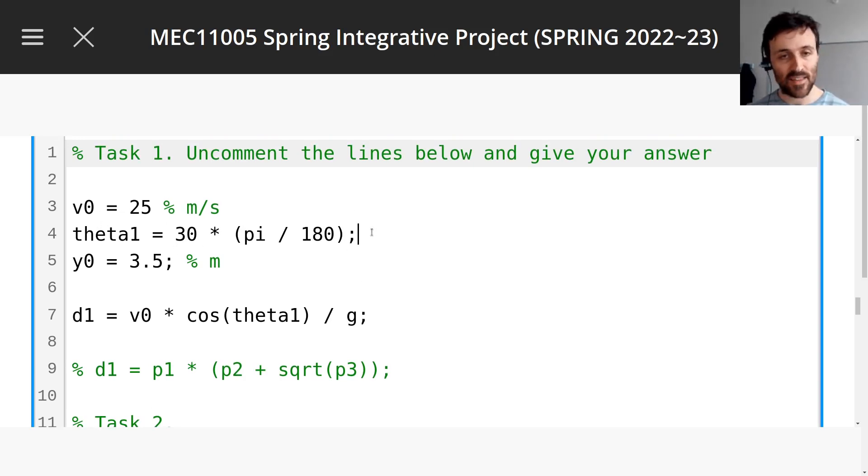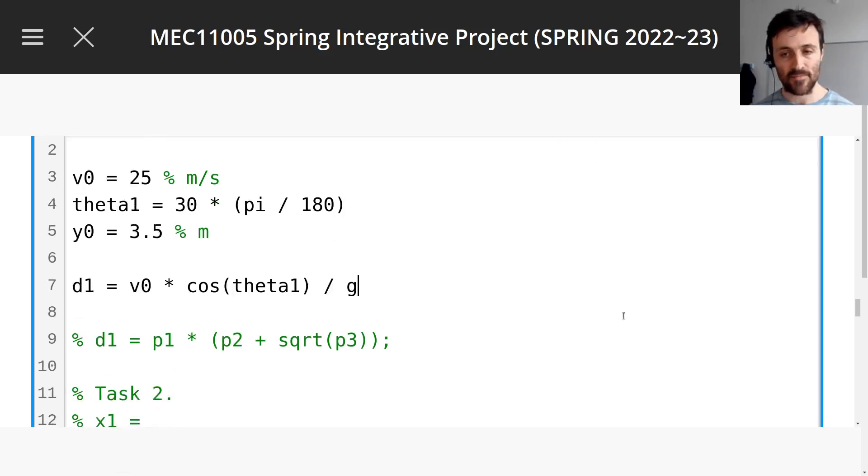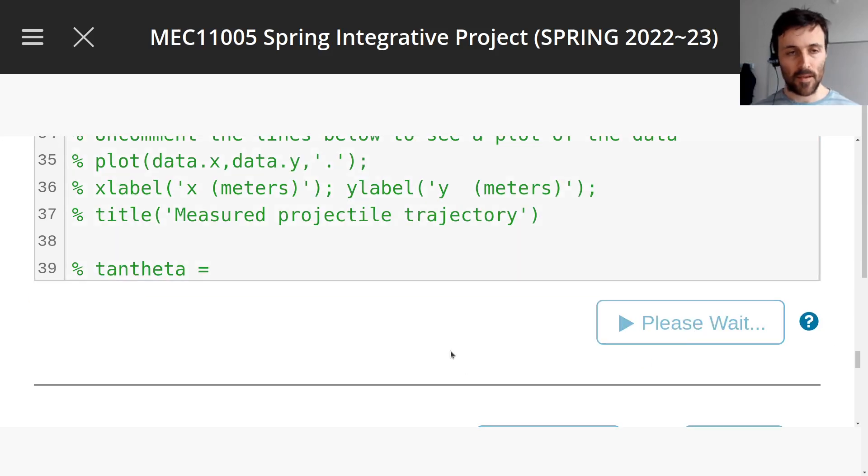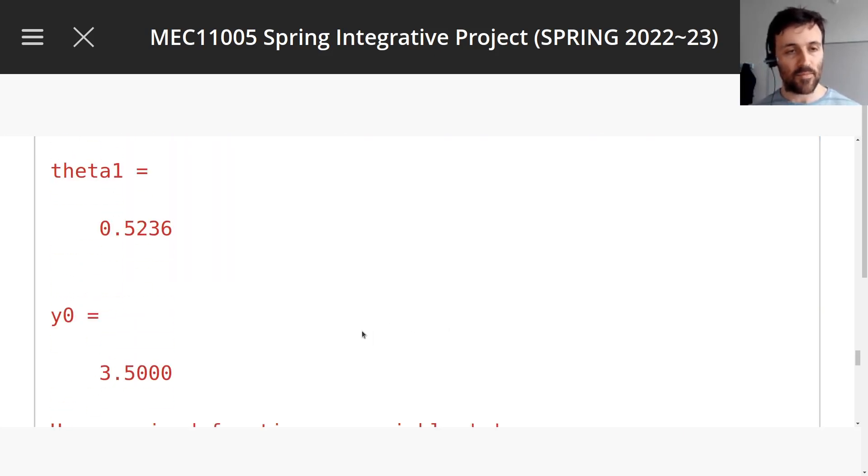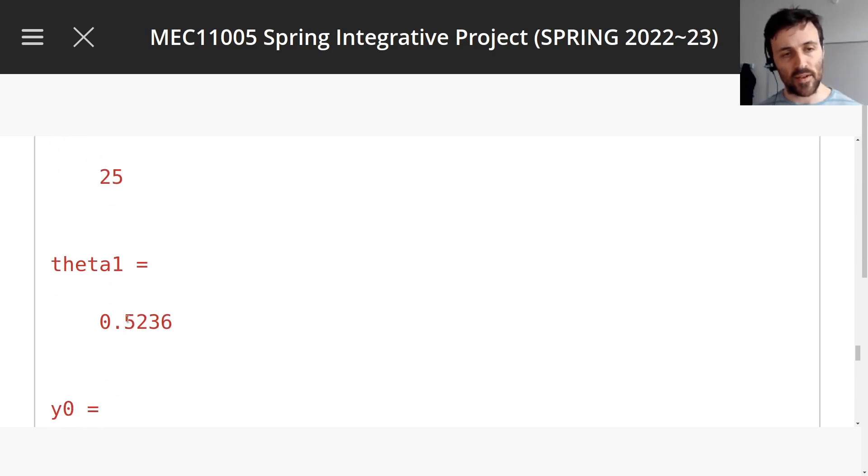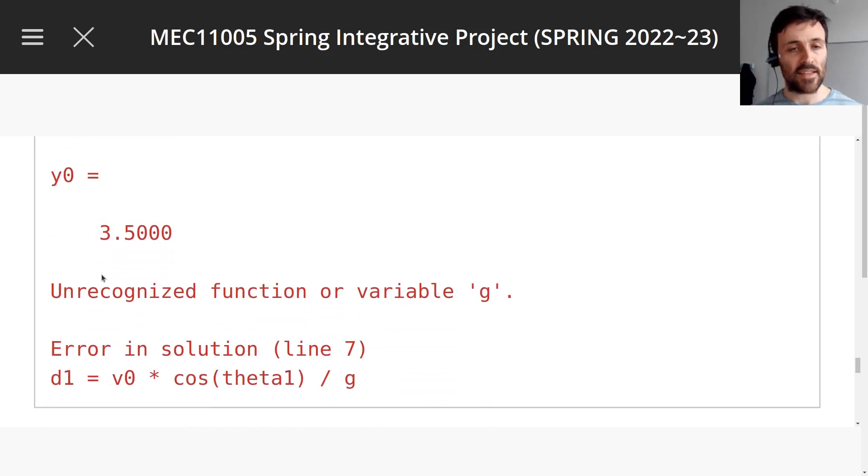So if I uncomment, if I remove the semicolon, when I run the code, it's going to tell me the values of these variables. Let's do that. That's a good starting point. Run script. Your first ever run. Computer doing complicated things. Boom. It's run the script. It says v0 is 25, theta1 is this. You can check with your calculator if you want that this is correct value in radians.